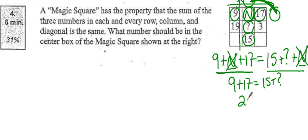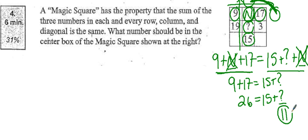So I now end up with 9 plus 17 equals 15 plus what? Well, 9 plus 17 is 26. So 26 equals 15 plus what? What do I add to 15 to get 26? That would be 11. So if I put 11 in for the question mark, that should solve this magic square.